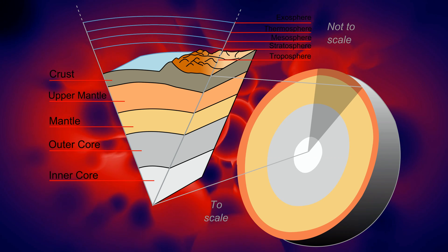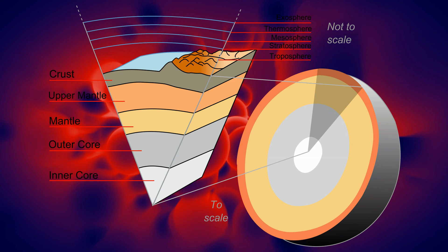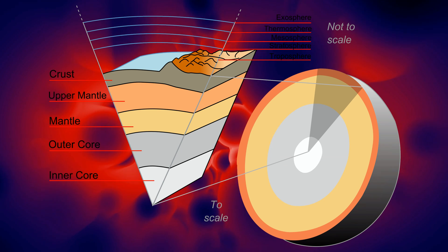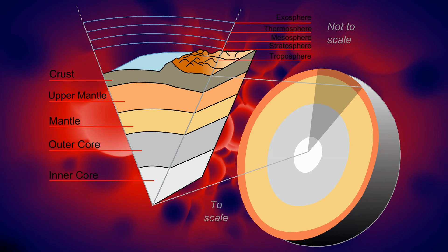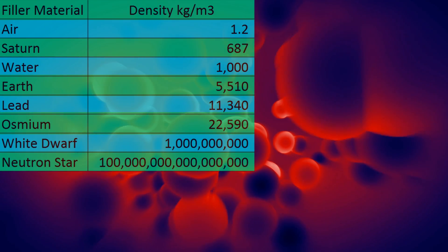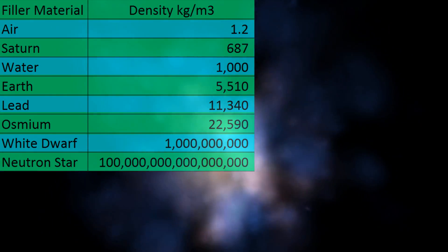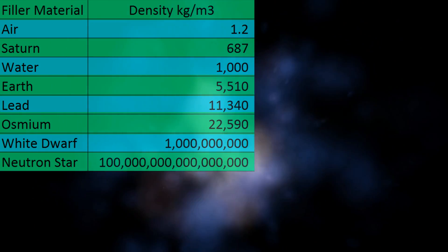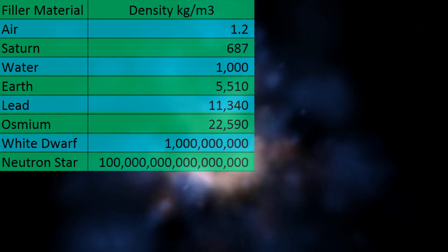But the key thing is that your filler's density, to get the same gravity as Earth, is inverse to its size compared to Earth. Whatever the diameter or radius is in comparison to Earth the density of your filler material is inverse to that. Triple your diameter and you need a third the density for your filler. Build a planet a tenth the diameter of Earth and you need a filler ten times denser.